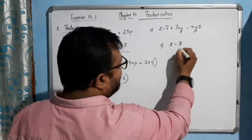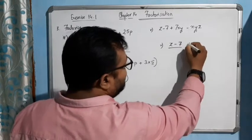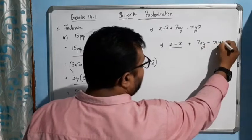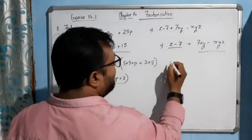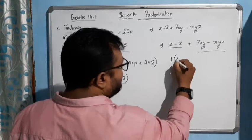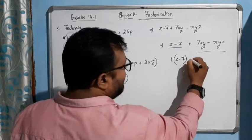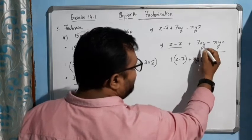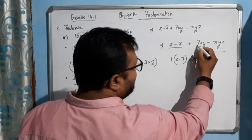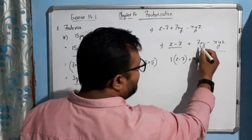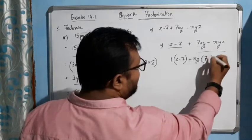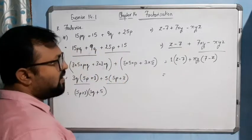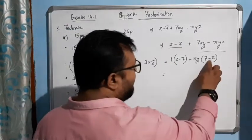See: Z minus 7 — the first two terms — plus 7XY minus XYZ — the second two terms. From these two terms, only 1 can be taken as common: 1 times (Z minus 7). Here, from 7XY and XYZ, you can take XY as common, and ultimately 7 and minus Z will be left behind. But see what happened — there is a minus sign issue: it is Z minus 7 here, but it becomes 7 minus Z there.